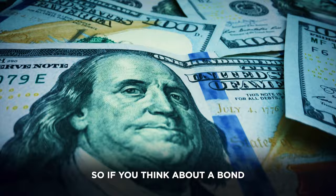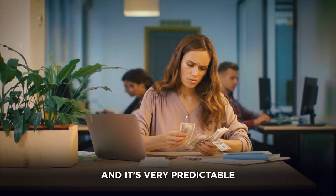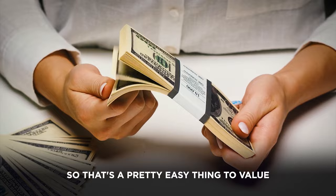So if you think about a bond, a bond pays a 5% coupon interest rate. You get that every year or twice a year, split in half. And it's very predictable. And if it's a U.S. government bond, you know you're going to get it. So that's a pretty easy thing to value.